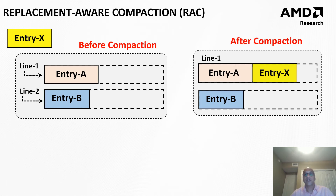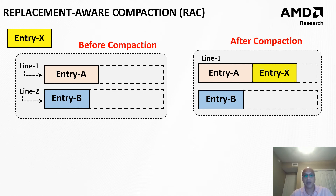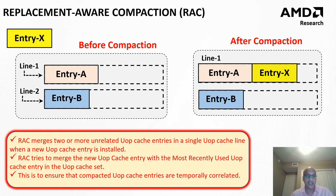The idea of replacement-aware compaction is that since we cannot afford to maintain LRU information per UOP cache entry, for compacted entries we maintain one LRU value for the entire line irrespective of the number of UOP cache entries compacted in it. The replacement-aware compaction scheme tries to compact temporally correlated micro-op cache entries into the same UOP cache line. As shown here, an entry X being filled into the micro-op cache can be compacted with entry A or entry B; since entry A was accessed more recently than entry B, entry X is compacted with entry A. This increases temporal proximity and allows the common LRU information to better reflect the usage patterns of these UOP cache entries.